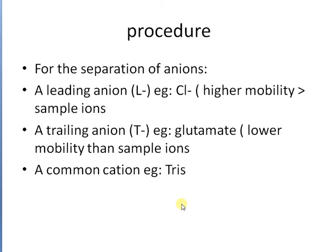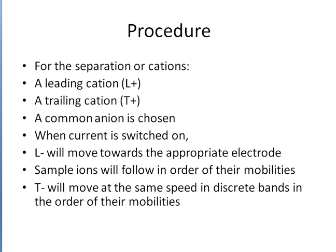So what are the procedures? Today we discuss the procedure of isotachophoresis. For separation of anions, a leading anion has high mobility of sample ions. The trailing anion — like glutamate — has lower mobility than the sample ions, with a common cation of TRIS. Knowing the procedure means we can easily apply electrophoresis.